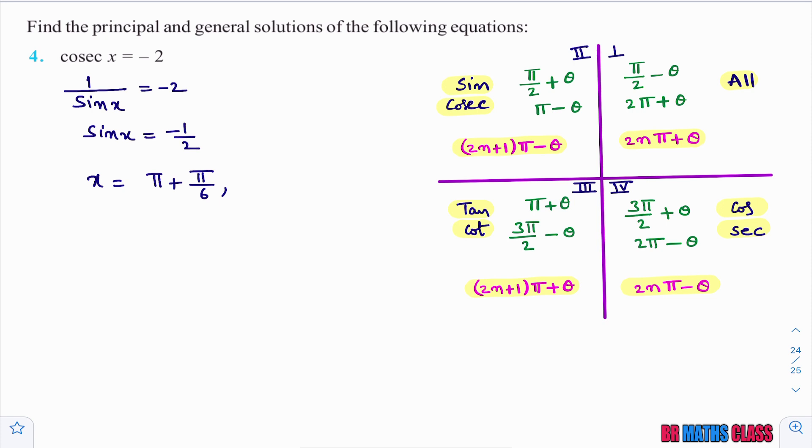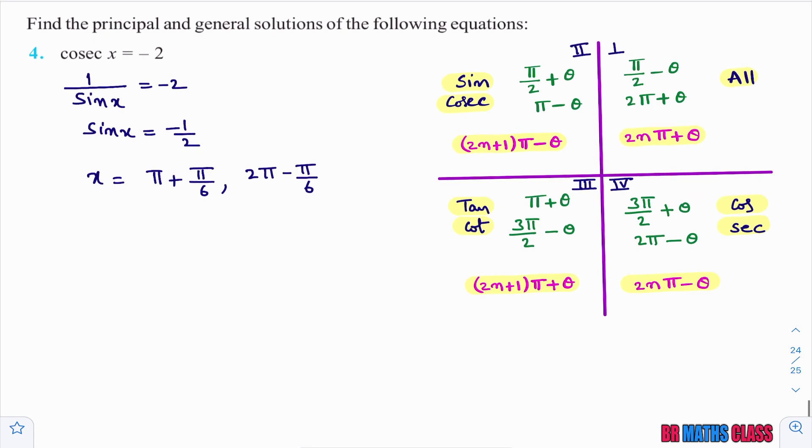We know that in fourth quadrant, sine is negative. 2pi minus theta lies in fourth quadrant. So to find that, just simply write 2pi minus pi by 6. If you want, you can calculate sine of 2pi minus pi by 6. You will get minus 1 by 2 only.